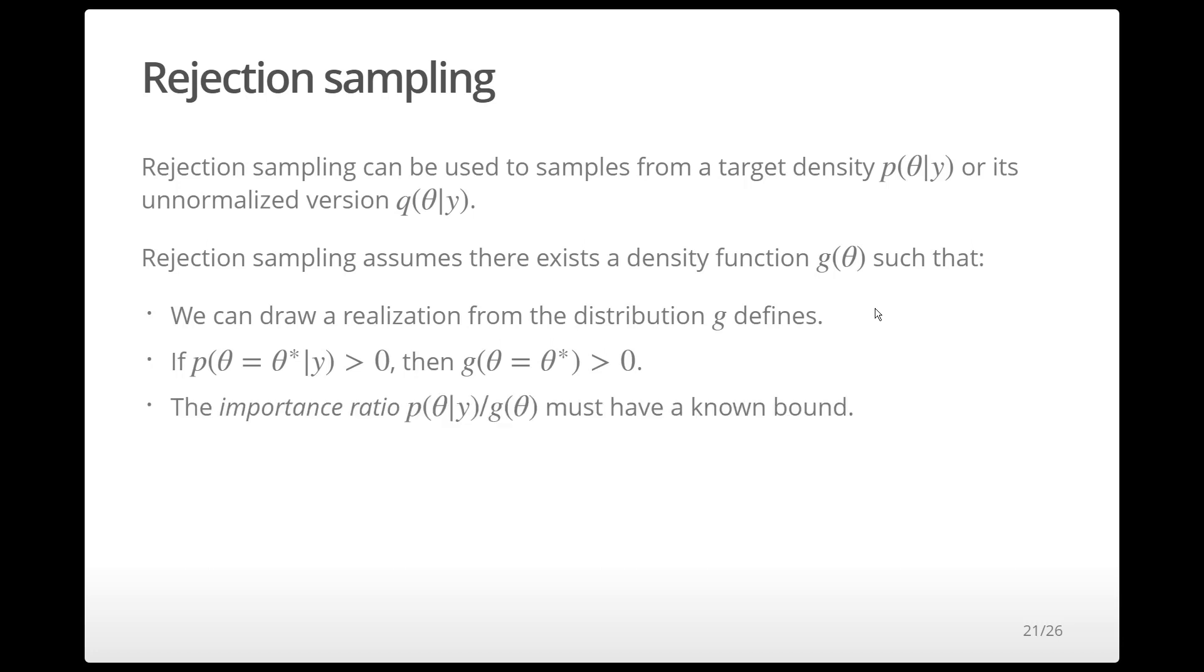There must be a constant m such that the importance ratio p over g is bounded by m for all values of theta.